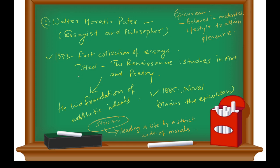Second was Walter Horatio Pater, essayist and philosopher. In 1873 his first collection of essays titled 'The Renaissance: Studies in Art and Poetry' was published. He laid the foundation of aesthetic ideals through this essay. His novel was published in 1885 - 'Marius the Epicurean'.